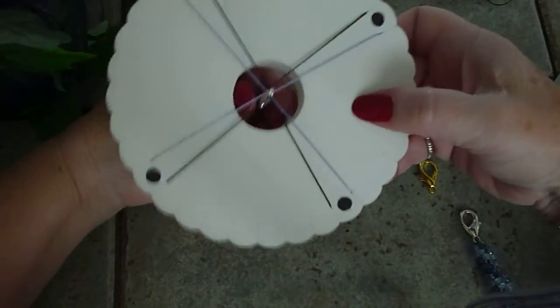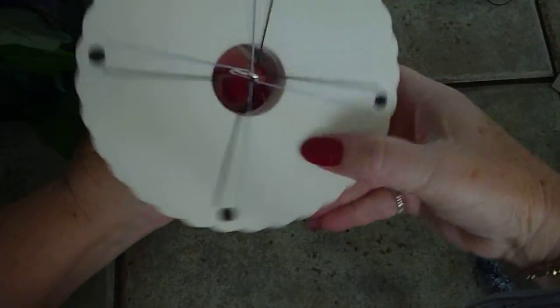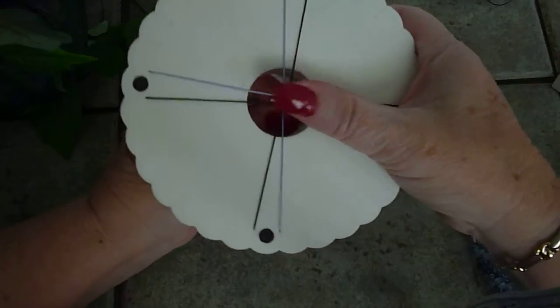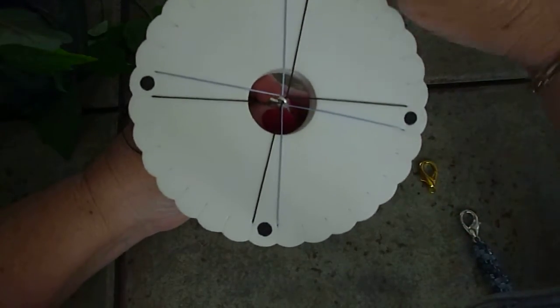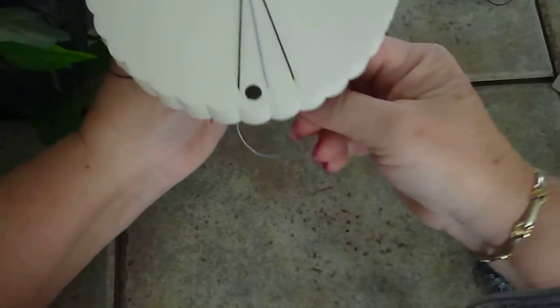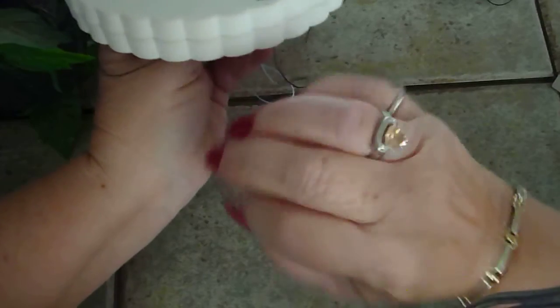So then all I do is I hold the lobster claw to give it a little bit of tension and then do braid with no beads. And I do that for eight, I'm sorry, for 12 turns.